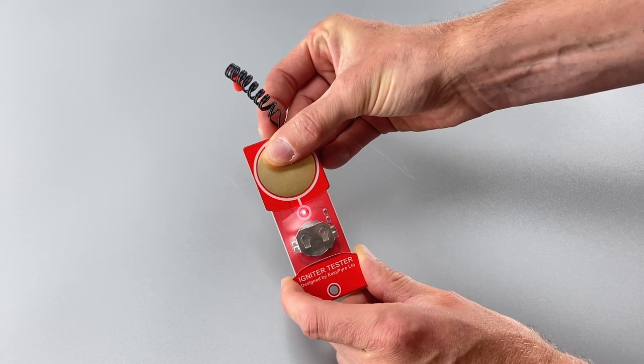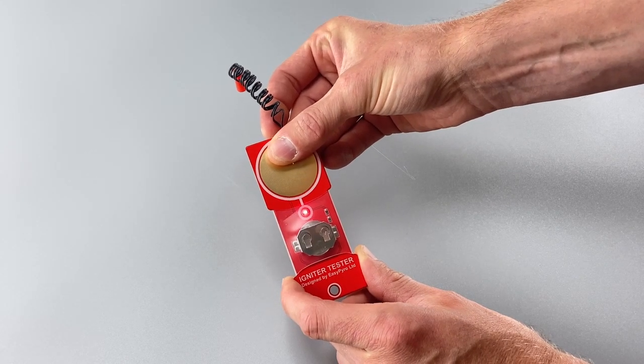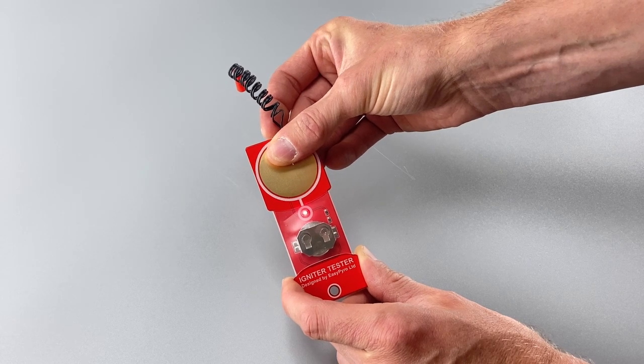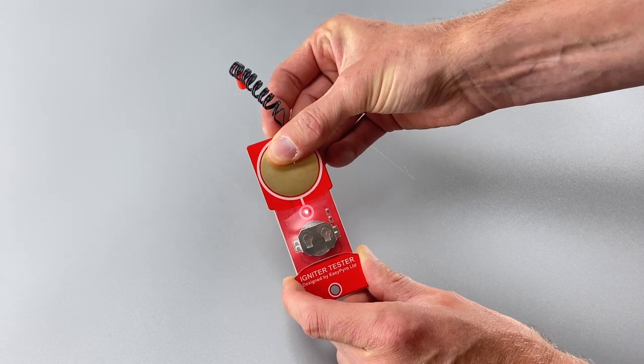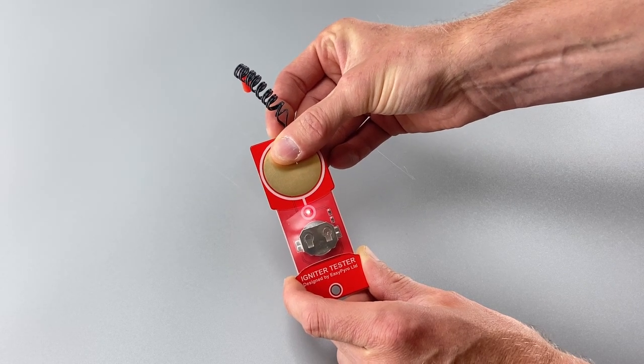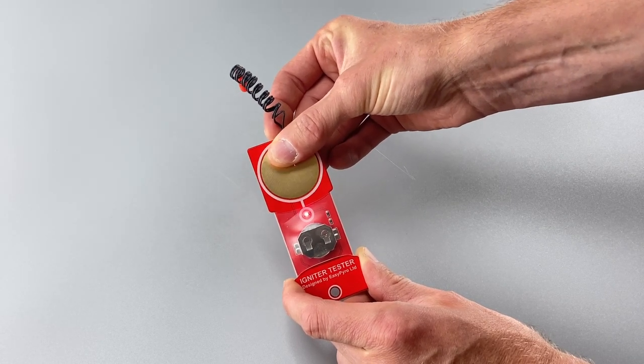This is really handy if you're going to be wiring your igniters in series or parallel or extending the wires. You just want to make sure those connections are good and check everything before it's connected to the firing system or the firework.